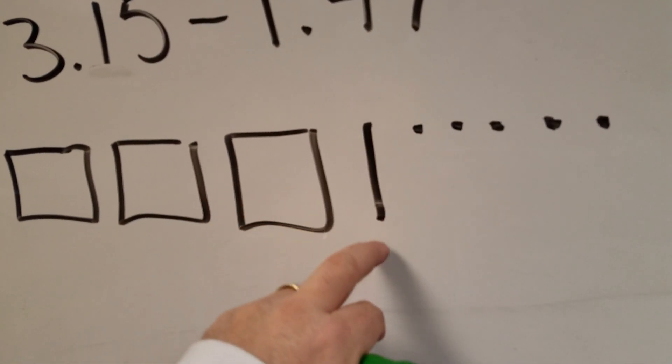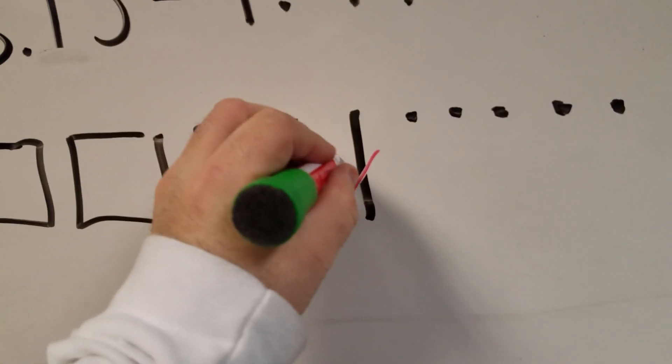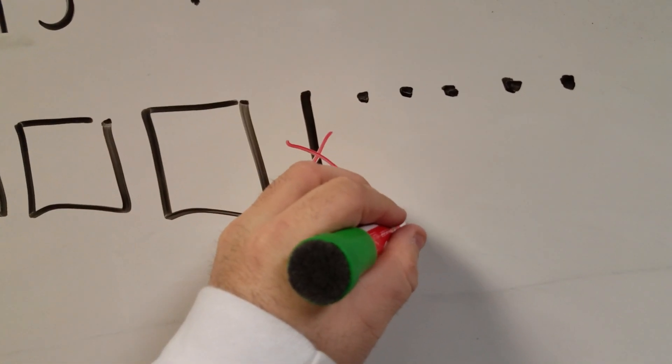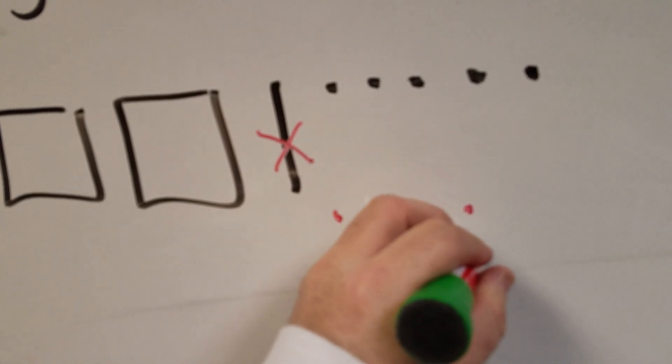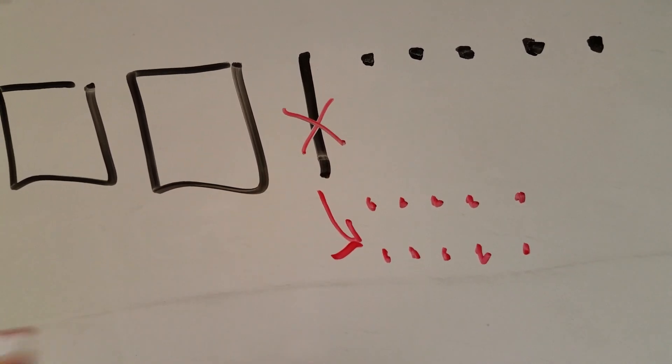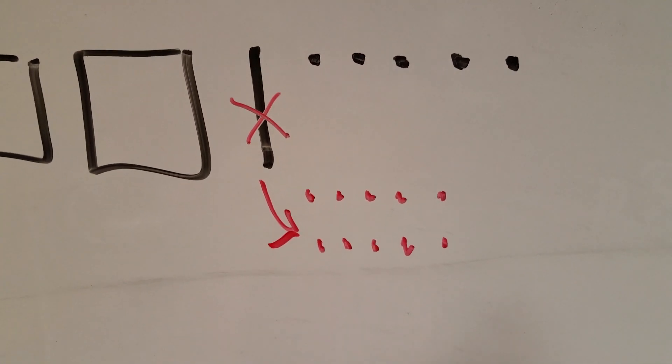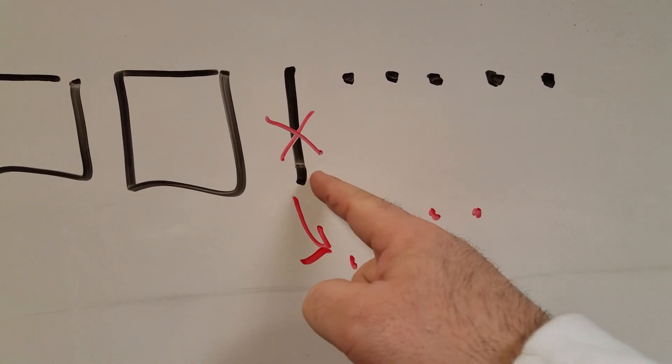So what I have to do is I'm going to go over to this tenth and I'm going to break this into seven, eight, nine, ten. This is still the same thing I just broke it into hundredths because ten hundredths equals a tenth.